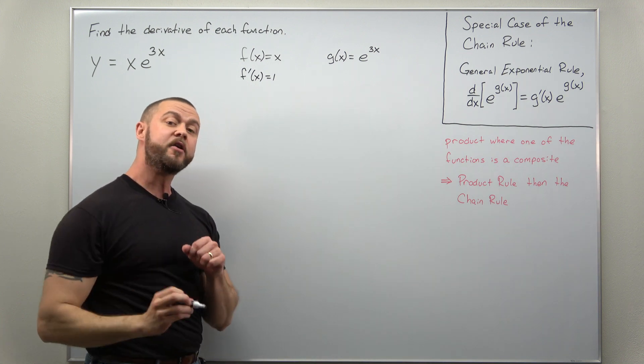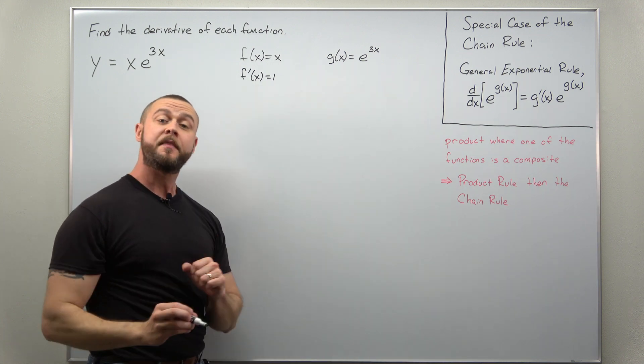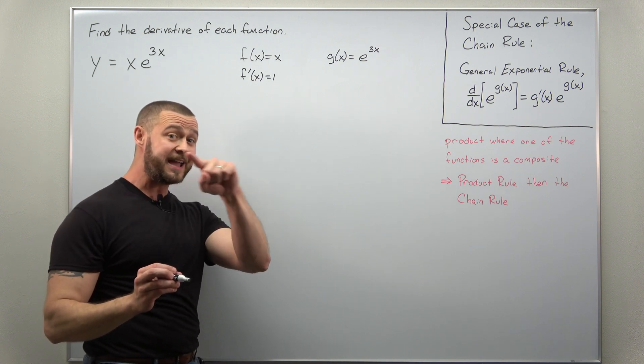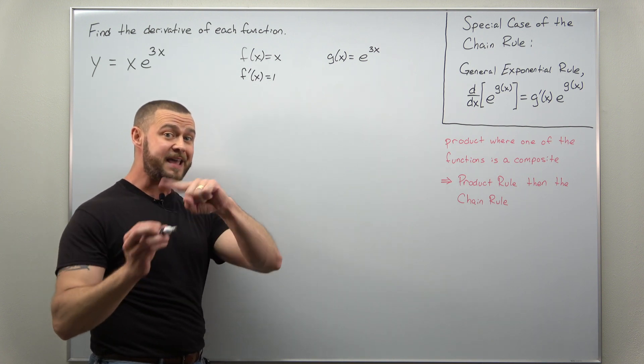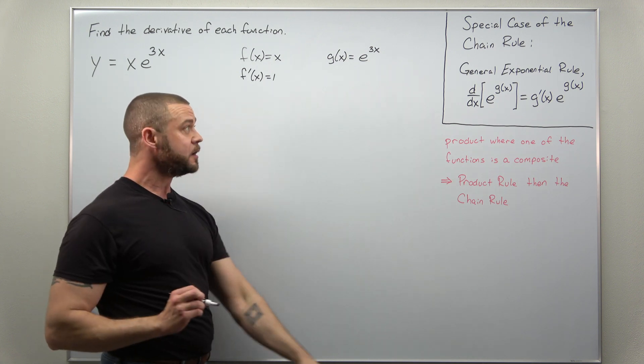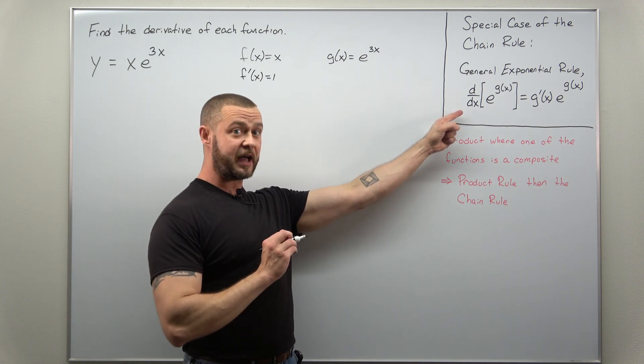Now when you calculate the derivative of g, that's where you're going to be using the chain rule. But we don't want to go through divide and conquer identifying the outer and inner function there—that's going to be a lot of work. Instead, we're going to make use of the general exponential rule.